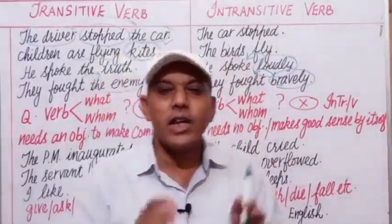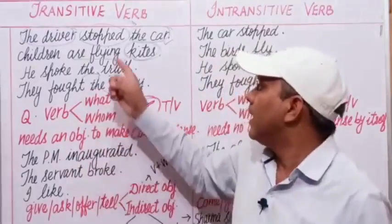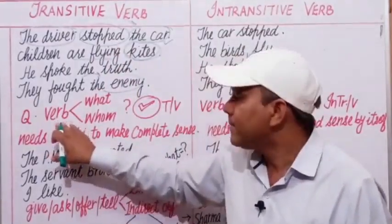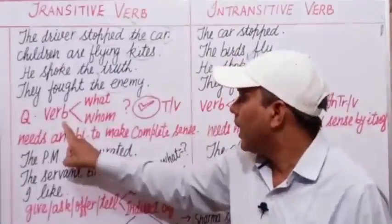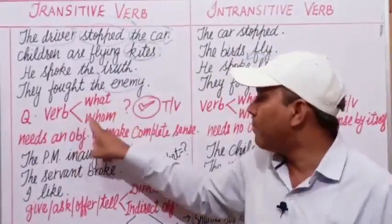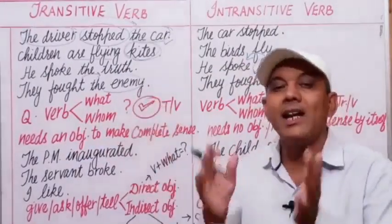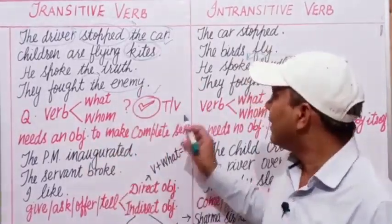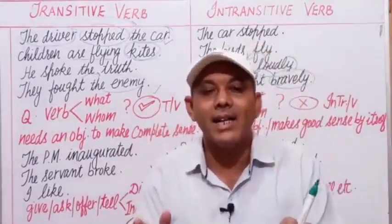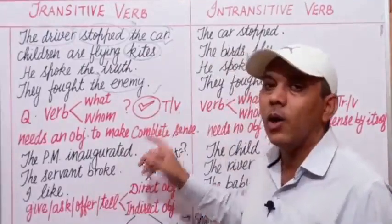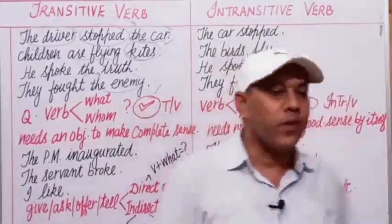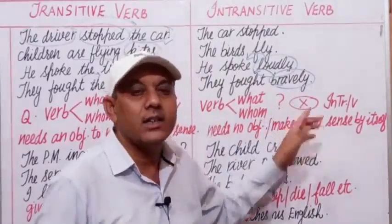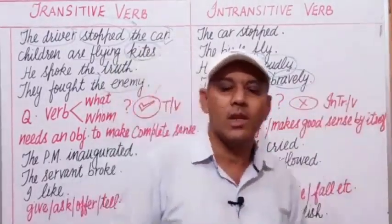How can we identify a transitive or intransitive verb in a sentence? Look at this formula: frame a question — verb plus what? or verb plus whom? If you get an answer, that answer will be the object of the transitive verb, and that verb is said to be a transitive verb. If we get no answer by framing verb plus what? or verb plus whom?, the verb is an intransitive verb.